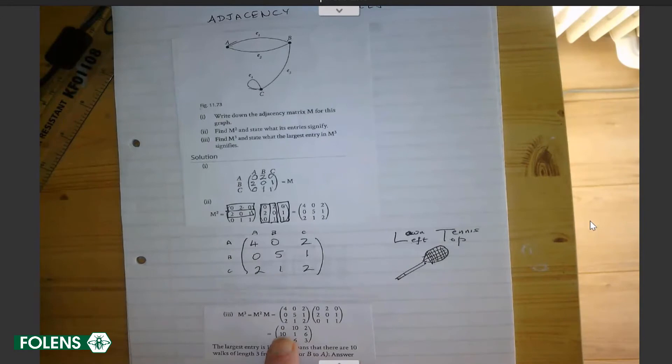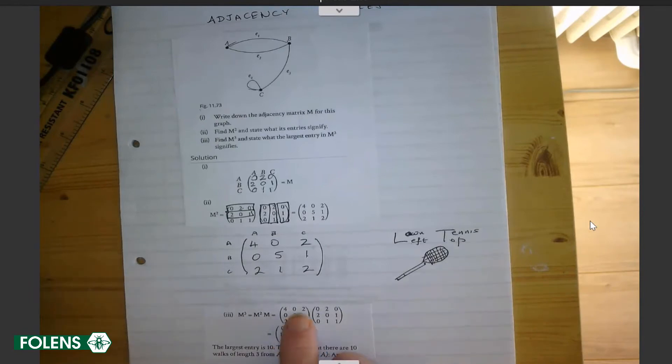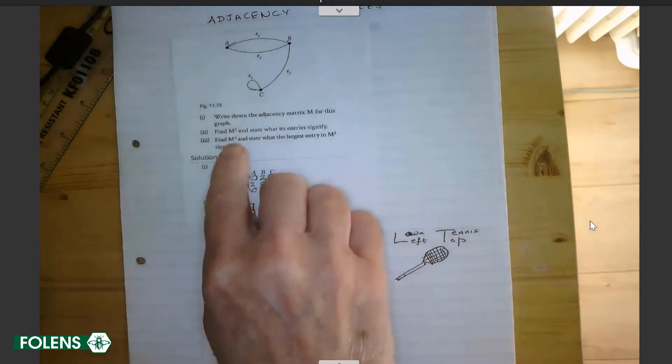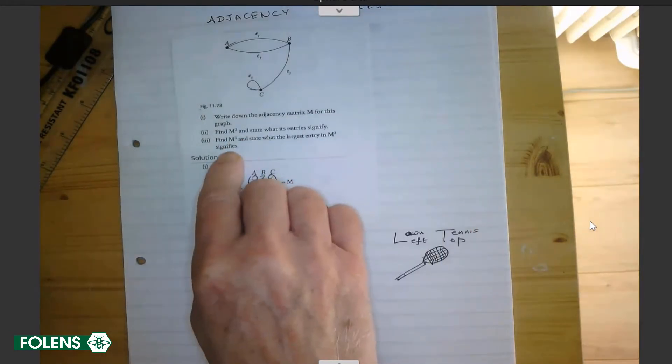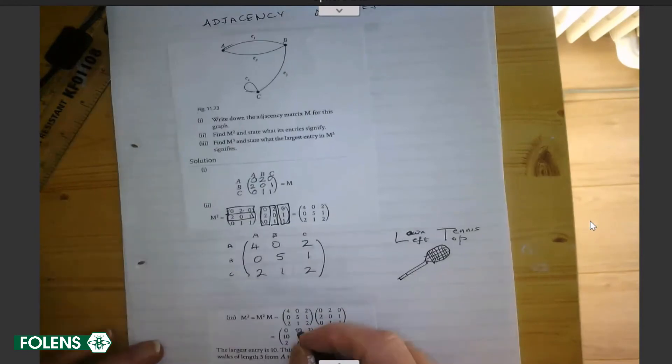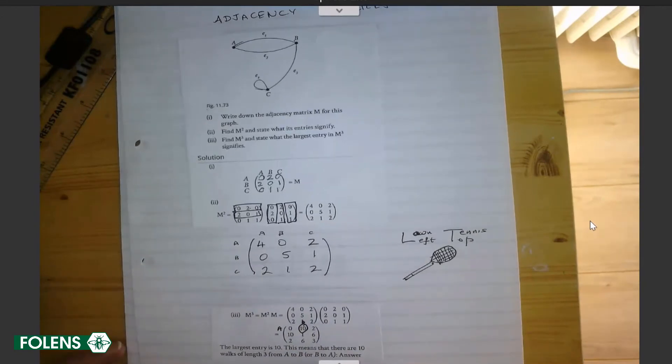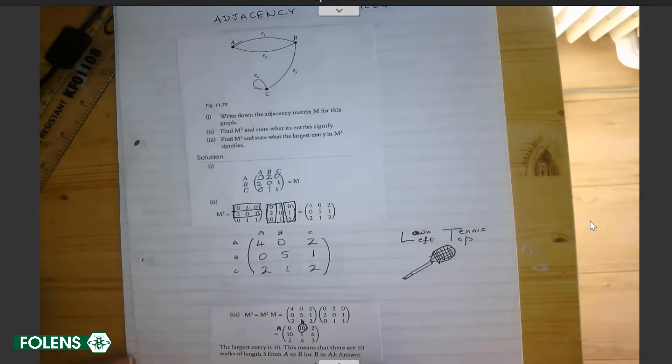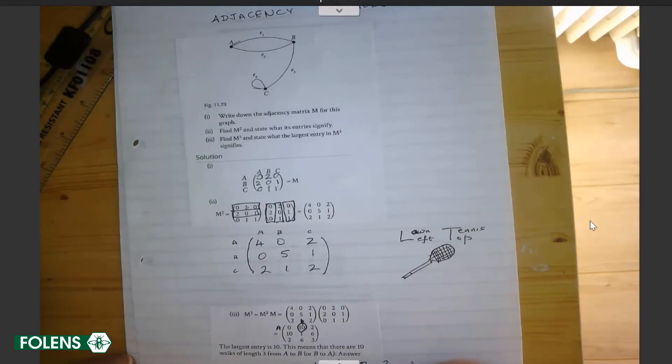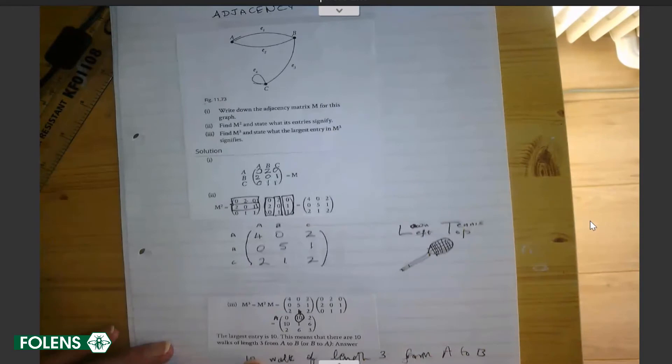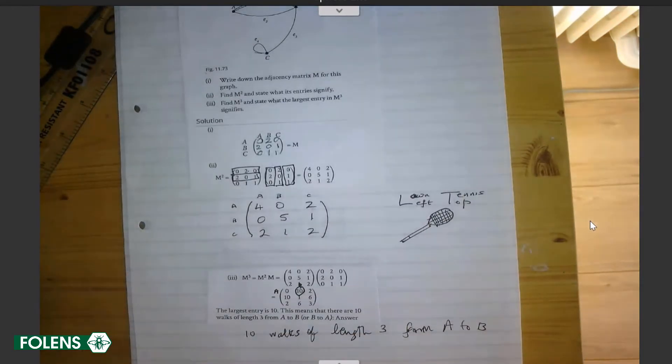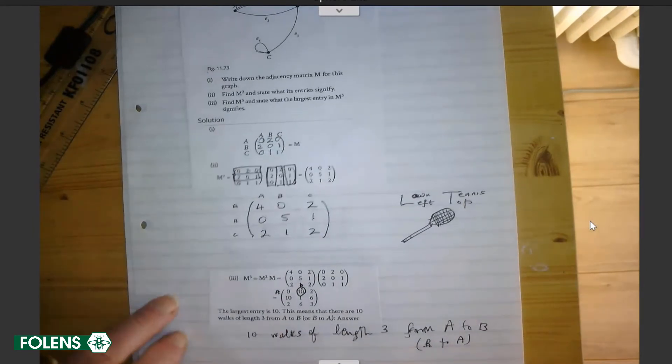If you do M cubed, you get 0, 10, 2, 10, 1, 6, 2, 6, 3, by multiplying M squared by M by the diving board method. And the question is, state the largest entry in M cubed and see what it signifies. The largest entry is 10. If we take that entry there as 10, that goes from A to B, going from the left to the top. That means there are 10 walks of length three, because this is M to the power of three. There are 10 walks of length three from A to B, and obviously from B to A. That is very important.